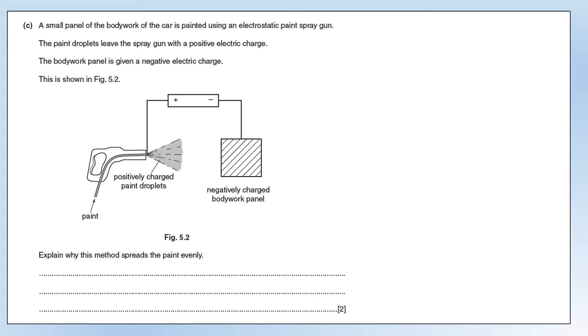Now we're going to look at painting the bodywork of the car using an electrostatic paint spray gun. The droplets are given a positive charge, the bodywork is given a negative charge. Explain why this method spreads the paint evenly. First of all, the droplets are going to be attracted to the bodywork panel. So they're all going to end up on the panel, which is good. This is basically how inkjet printers work. They charge the ink and then they charge the paper in the right places to get it to land in the right place. The reason the paint spreads out is because all the droplets are positive and that means that they will repel each other. And that's why they're spread evenly.